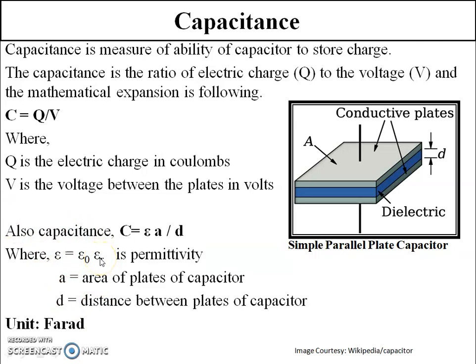Relative permittivity εᵣ varies as per the dielectric medium. The unit of capacitance is farad. So we have two equations of capacitance: C = Q/V, the ratio of charge to voltage, and C = ε₀εᵣA/d, which takes into account the physical parameters of the capacitor. Capacitance is directly proportional to the area of the plates and inversely proportional to the distance between the plates. To increase capacitance, increase the plate area or reduce the distance between plates.